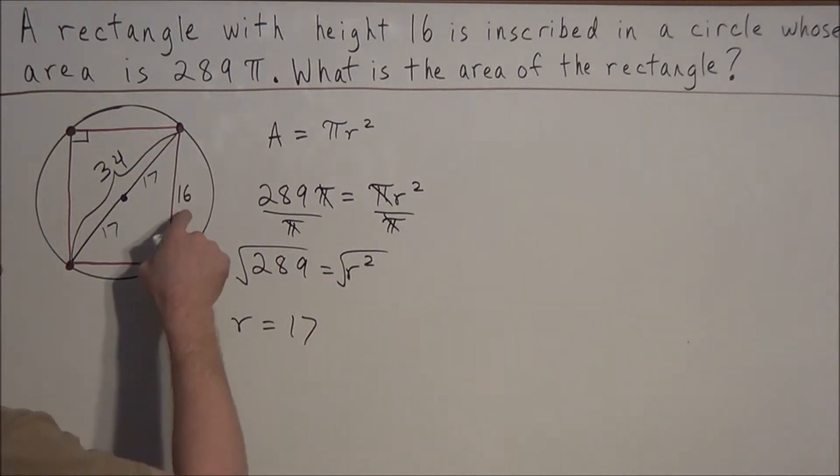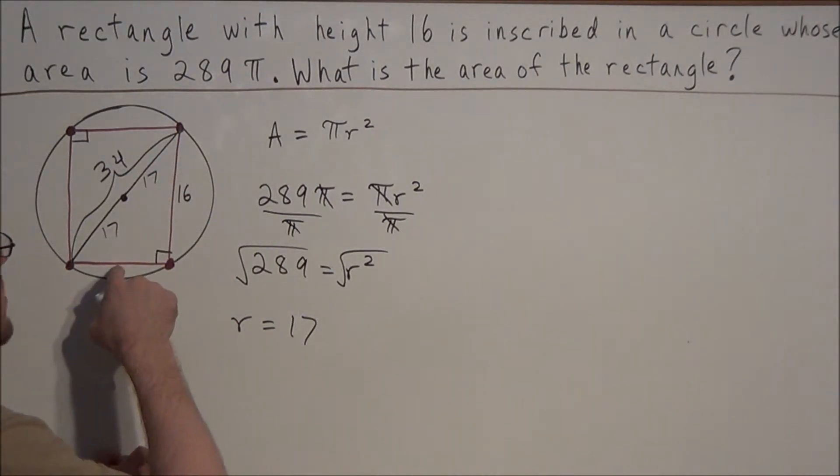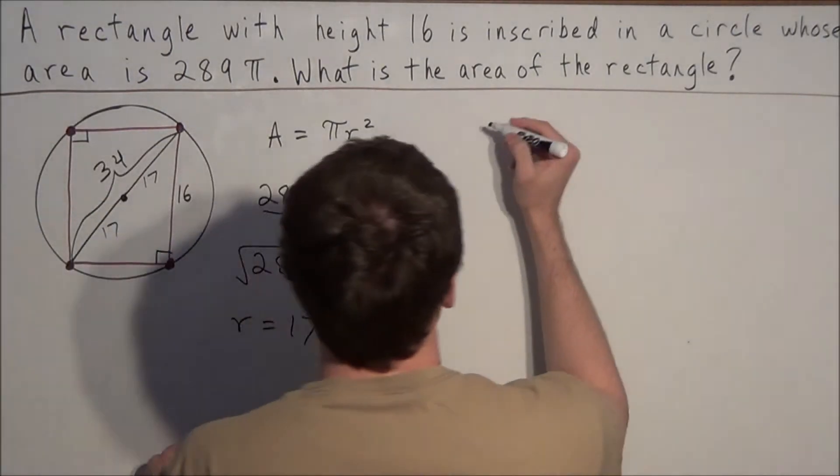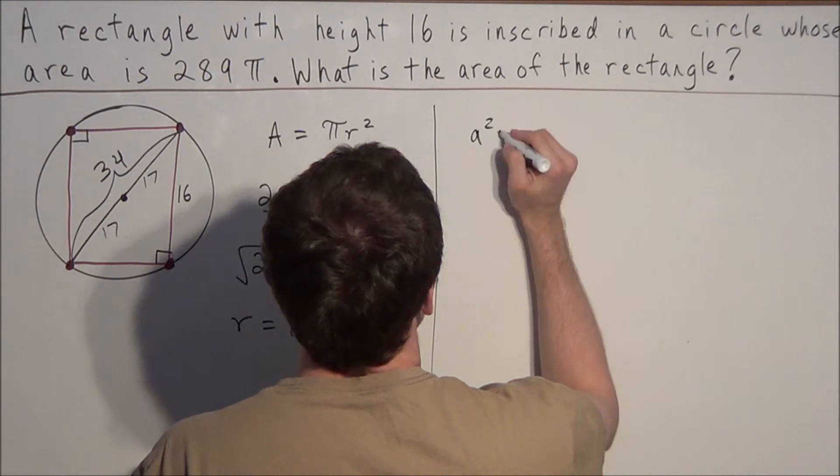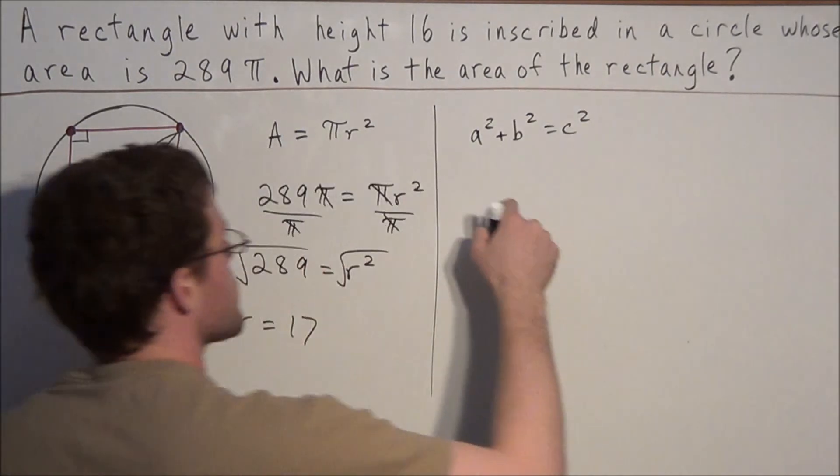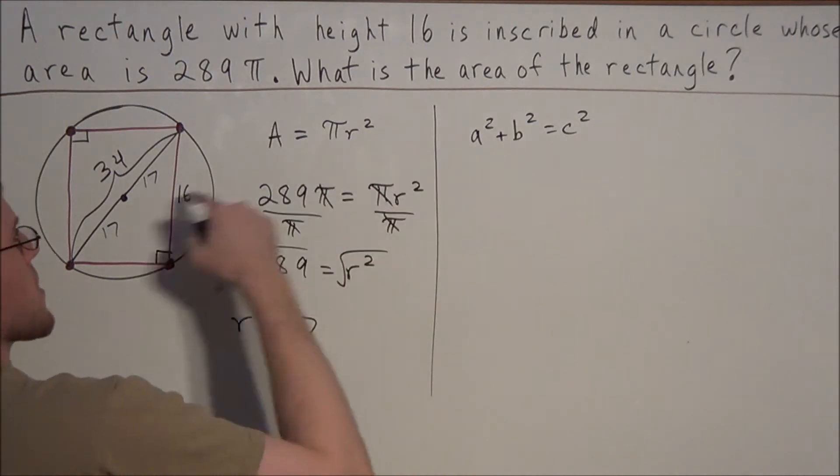So we have a right triangle with one leg 16 and a hypotenuse of 34. So to find the length of the missing leg, we could use the Pythagorean Theorem. So in general, we have a² + b² = c², where a and b are the legs, and c is the hypotenuse.